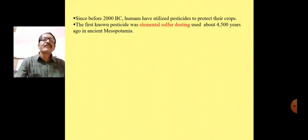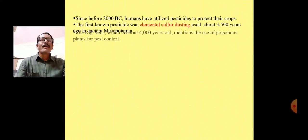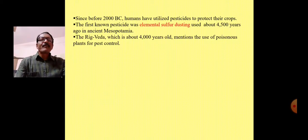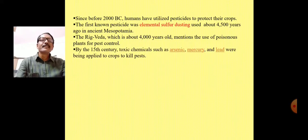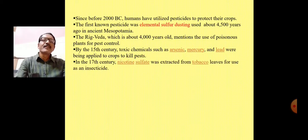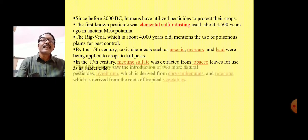The first known pesticide was elemental sulfur, used before 2000 BC. In the 15th century, toxic chemicals such as arsenic, mercury and lead were being applied to crops to kill pests. In the 17th century, nicotine sulfate was extracted from tobacco leaves for use as an insecticide.